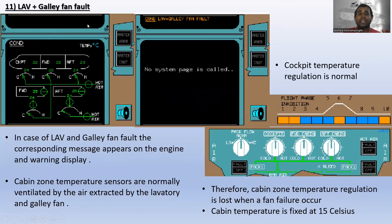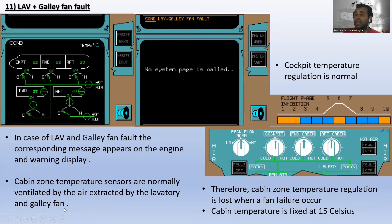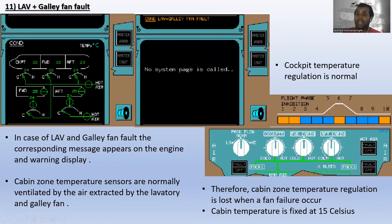In case of lavatory and galley fan fault, the corresponding message appears on the engine and warning display. The cabin zone temperature sensors are normally ventilated by the air extracted by the lavatory and galley fan. Cockpit temperature regulation remains normal, but cabin zone temperature regulation is lost when a fan failure occurs. The cabin temperature is fixed to 15°C. This occurs in flight phases one, two, six, and ten.